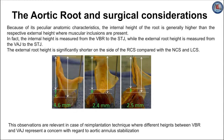The external root height is significantly shorter on the side of the right coronary sinus compared to the non-coronary sinus and the left coronary sinus. The presence of muscular inclusion places the ventricular-arterial junction farther from the virtual basal ring and nearer to the sinotubular junction at this level, while the absence of muscular inclusion makes the ventricular-arterial junction closer to the virtual basal ring at the level of the left coronary sinus and non-coronary sinus, minimizing the difference between the internal and external height.